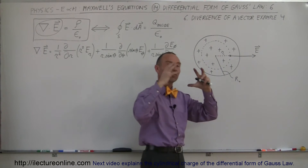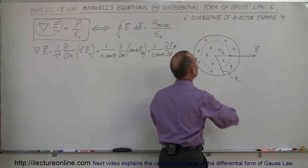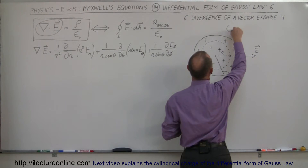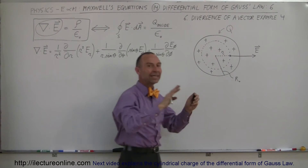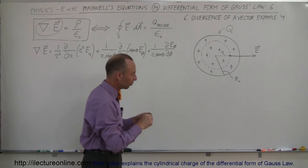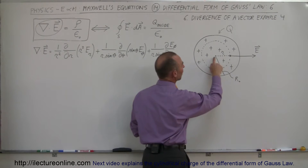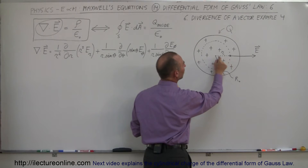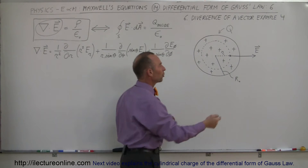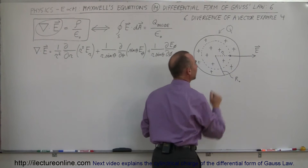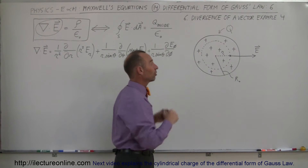This location is inside a spherical-shaped object that has charge distributed throughout the sphere. Q amount of charge is put inside the sphere, evenly distributed everywhere throughout it. The radius of the sphere is R sub nought, and we want to know the strength of the field at a distance r away from the center — any arbitrary point between the center and the edge of the sphere.